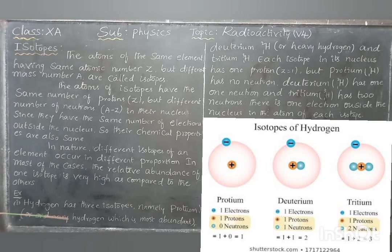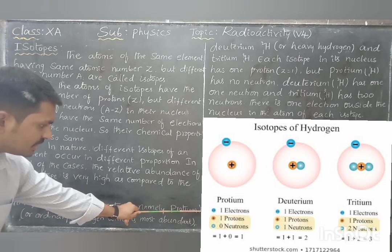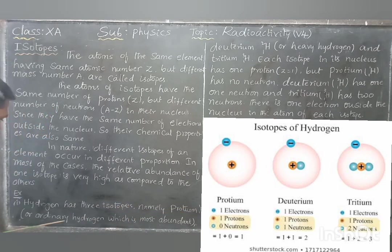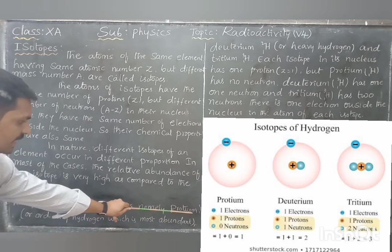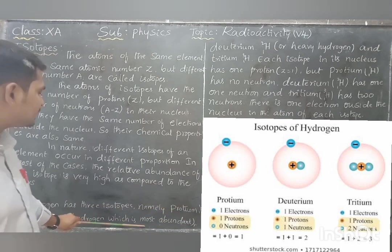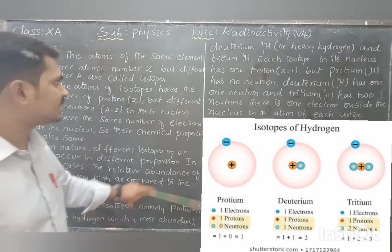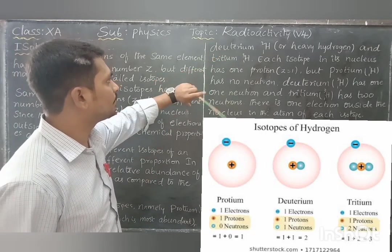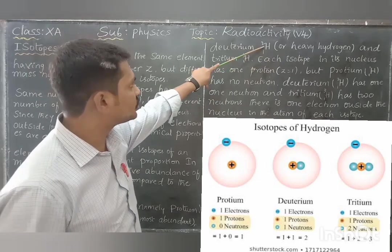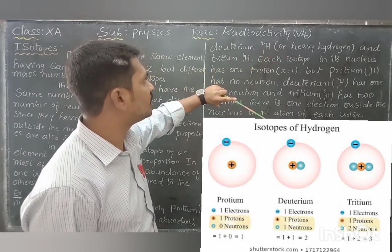Let us take hydrogen as an example. Hydrogen has three isotopes: namely protium H-1-1, or ordinary hydrogen, which is the most abundant in nature. The second isotope is deuterium, H-1-2, also called heavy hydrogen.